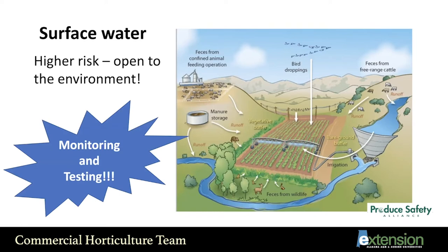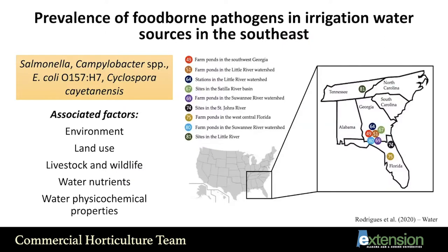The key point here is to monitor for risks and test the water. Testing is the only way to know that the water quality is adequate for fruits and vegetable production. Looking at the prevalence of foodborne pathogens in irrigation water sources in the Southeast — mostly for surface water — the most common pathogens found in the area were salmonella, campylobacter, pathogenic E. coli, and cyclospora.